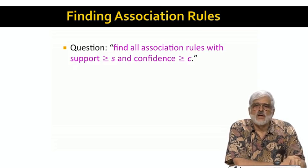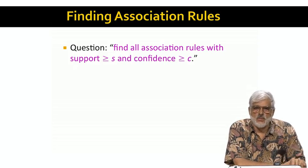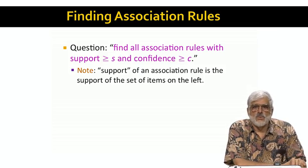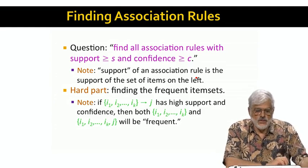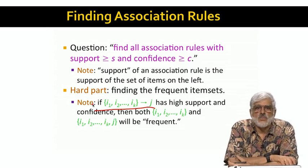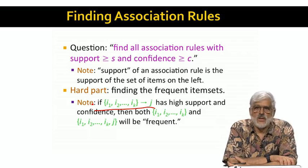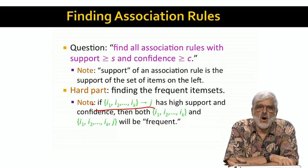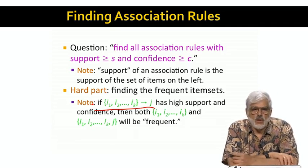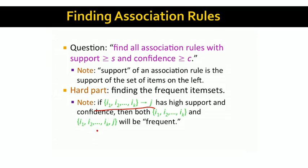One reasonable thing to do with market basket data is to find all association rules that have a minimum support S and a minimum confidence C, for some values of S and C that you decide on before you run the algorithm. The support of an association rule is the support of the side to the left of the arrow. That is, it is the number of baskets containing all the items on the left. The hard part of finding association rules is really finding the frequent item sets. If an association rule like this has support S, then the set on the left will be frequent with support S. But if the confidence of the rule is also high, that is the confidence C is close to 1, then the set of items with J, the item on the right thrown in, will have support CS.